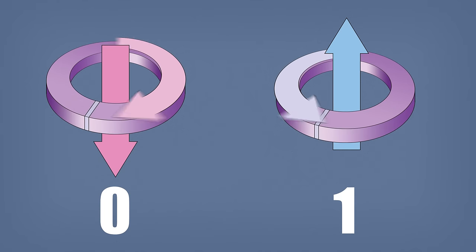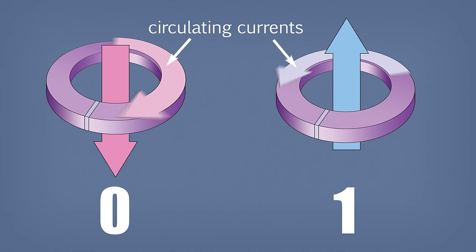So let's start by looking at a single qubit. A qubit can be in a state of either zero or one and these states are encoded in a circulating current and a corresponding magnetic field.